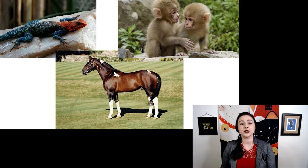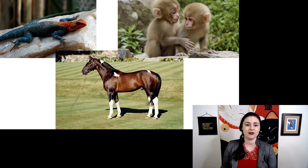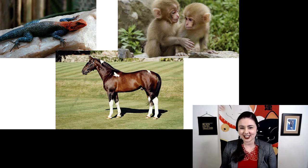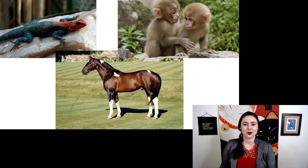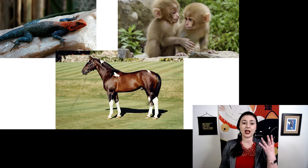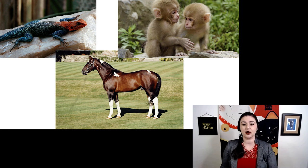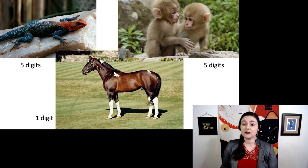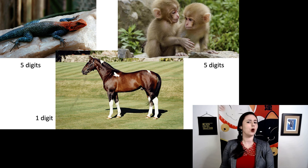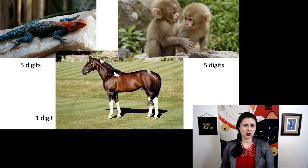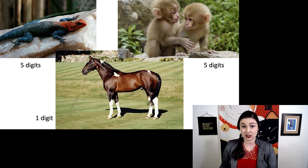Here's an example with three different animals: a red and blue lizard, some baby macaques, and a horse. If we look at the number of digits on their hands and feet — the lizard has five, the monkey has five, but the horse has one — we might say the monkey is more closely related to the lizard than to the horse because they are similar in this trait. Of course, we know that's not true because the horse and monkey are both mammals.